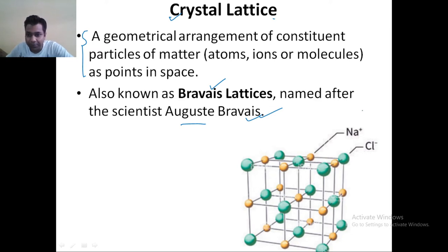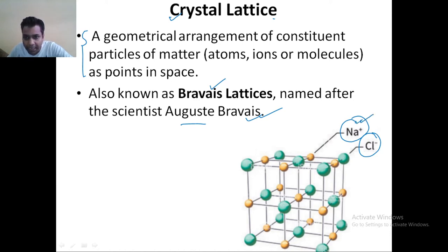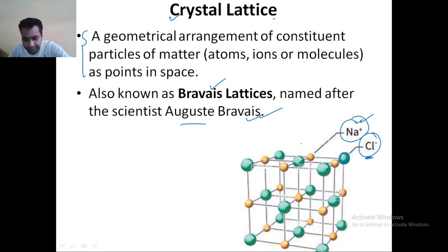As you can see from here, I have taken an example of NaCl — the common salt. In this, the yellow dot represents your sodium ion and the blue color represents your chlorine minus ion. So, this is the crystal lattice of your NaCl.